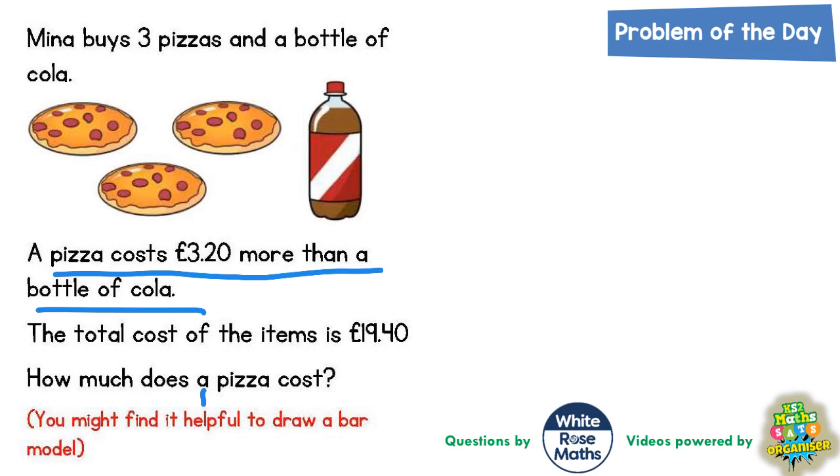What that means is that a pizza is a bottle of cola plus an extra £3.20. And we can say that about all the pizzas. So this pizza is a bottle of cola plus an extra £3.20, and this pizza is a bottle of cola plus an extra £3.20.